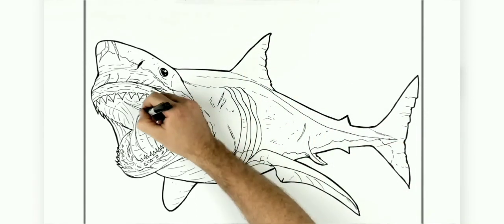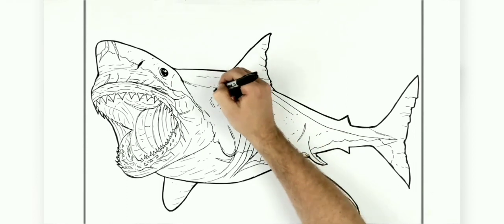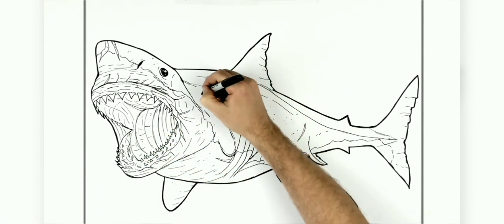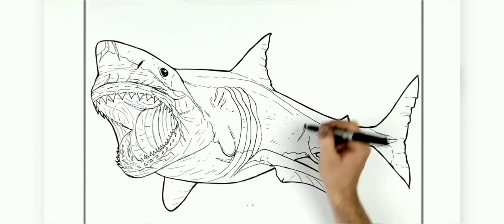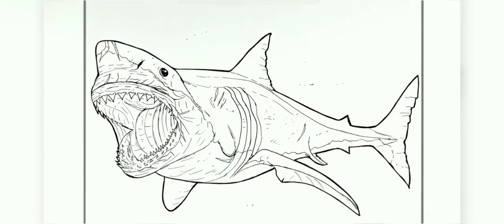But I think that's basically it. That is how to draw a megalodon. If you want, you can put like a whale going into his mouth because they're big creatures. So I'll leave it there. Hope it's helpful, thanks for watching. See you in the next one, bye.